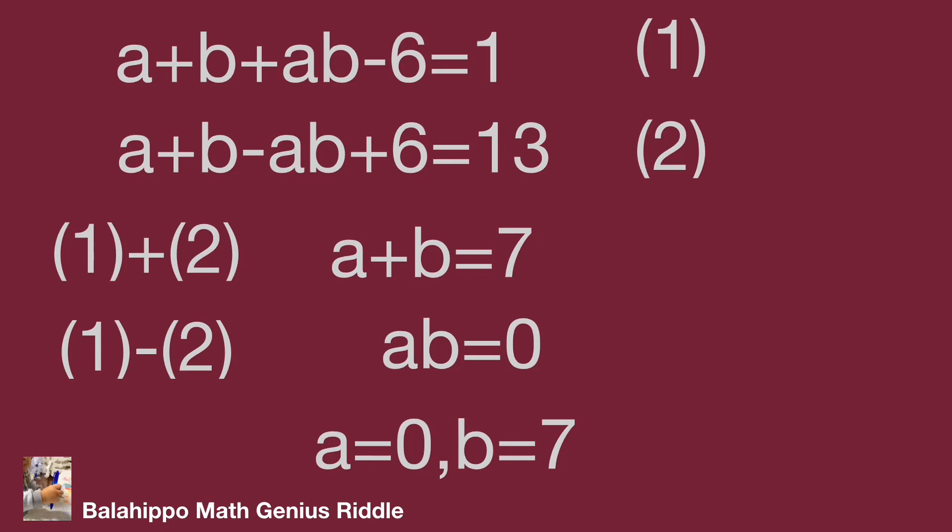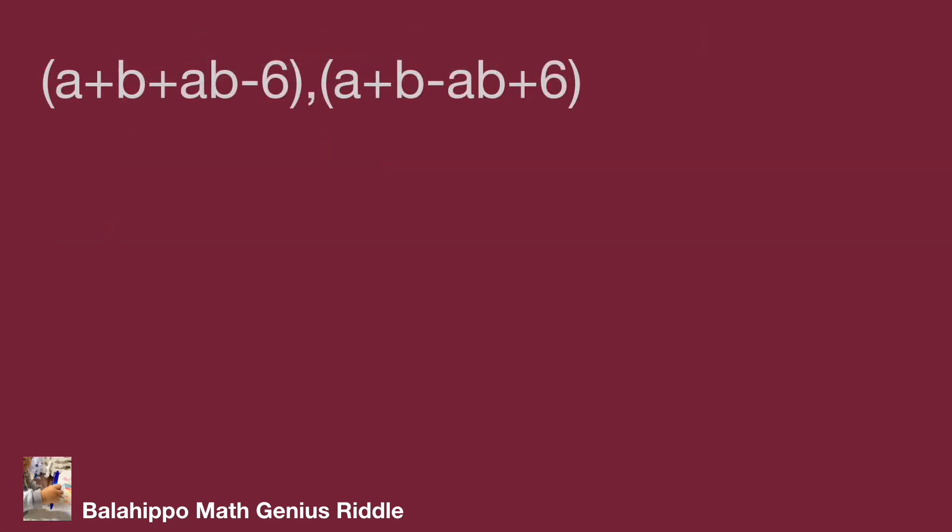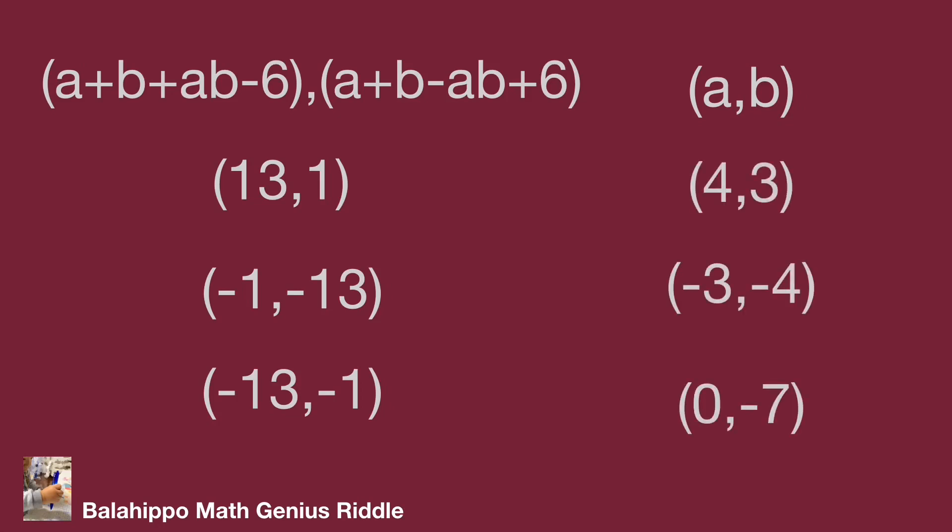Using the same operation for the other 3 number groups, 13 and 1, -1 and -13, -13 and -1, we get the number groups for (a, b): (4, 3), (-3, -4), and (0, -7).